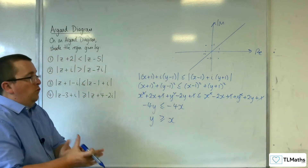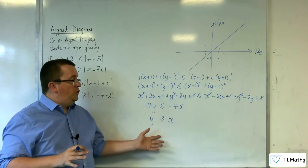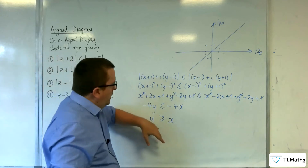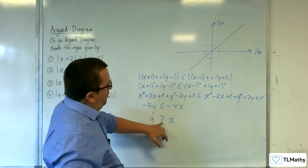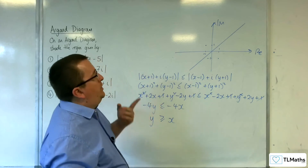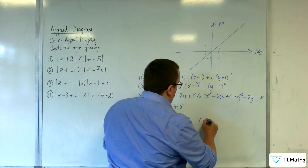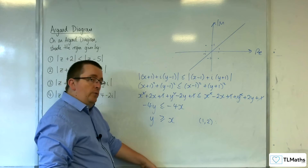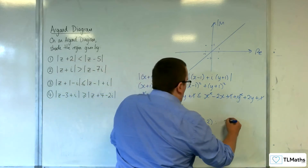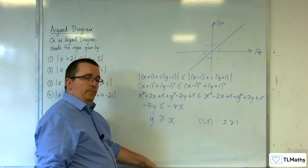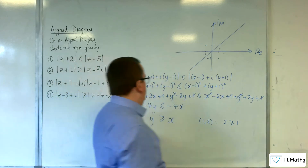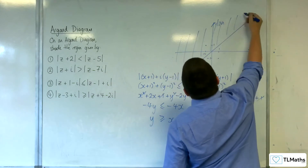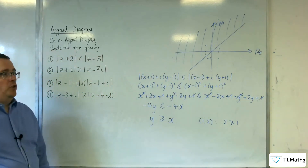Now if you're ever unsure about which region to consider, choose a point that's not on the line. Let's say we choose the point (1, 2). If I substitute it in and it works in the inequality, then I know that's the region I want. So y is 2, x is 1 — is 2 greater than or equal to 1? Yes. So above the line is the region I want, and so I've shaded the correct region.